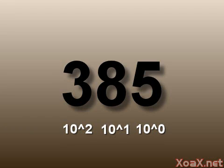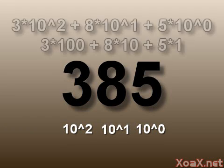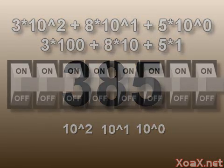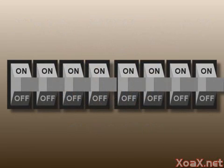Each of these corresponds to a multiple of a power of 10. So 385, for example, can be thought of as 3 times 10 to the 2, plus 8 times 10 to the 1, plus 5 times 10 to the 0. Similarly, the switches in a byte represent a binary number.